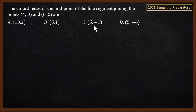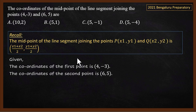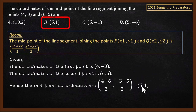Another midpoint question from the District Preparatory Exam of 2021: find the coordinates of the midpoint of the line segment joining (4, −3) and (6, 5). Using the same formula: x = (4+6)/2 = 10/2 = 5; y = (−3+5)/2 = 2/2 = 1. So the answer is (5, 1), which is answer B.